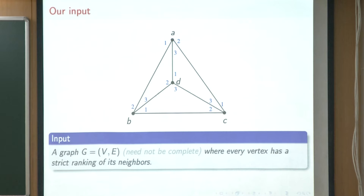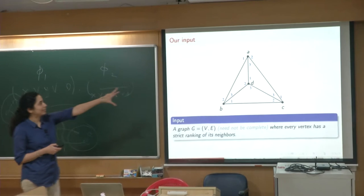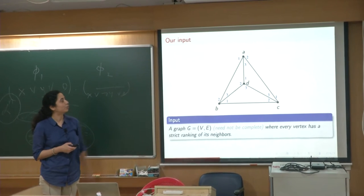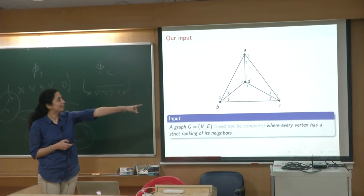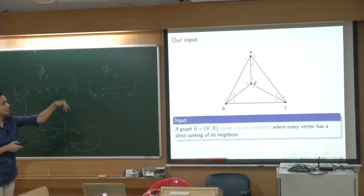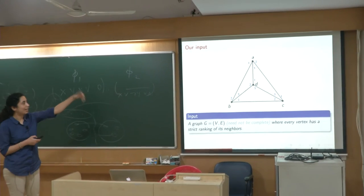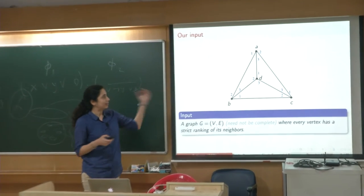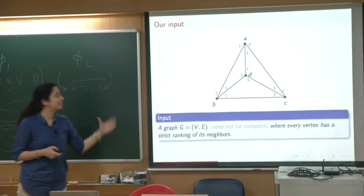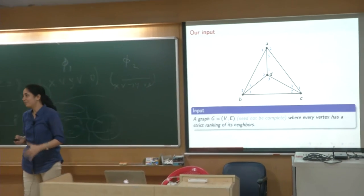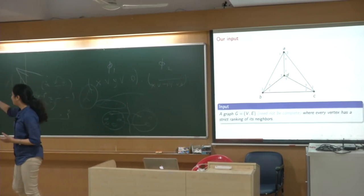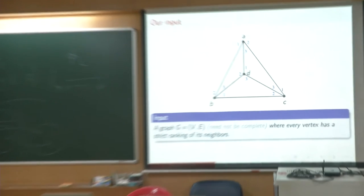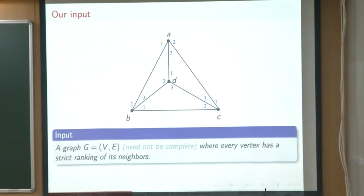Our input is a graph — it need not be complete, though in this example I somehow drew a complete graph — where every vertex has a strict ranking over its neighbors. So A regards B as its top neighbor, C as its second choice, and D as its worst neighbor. Think of this as participants for FSTTCS: we need to pair up people for guest house rooms and everybody has preferences, and not every pair is willing to share a room.